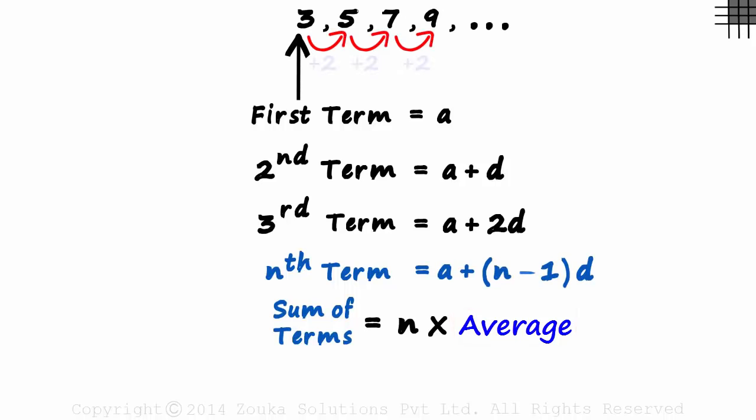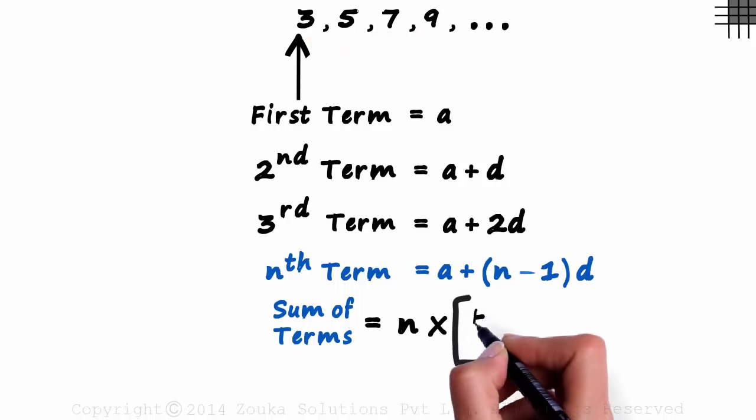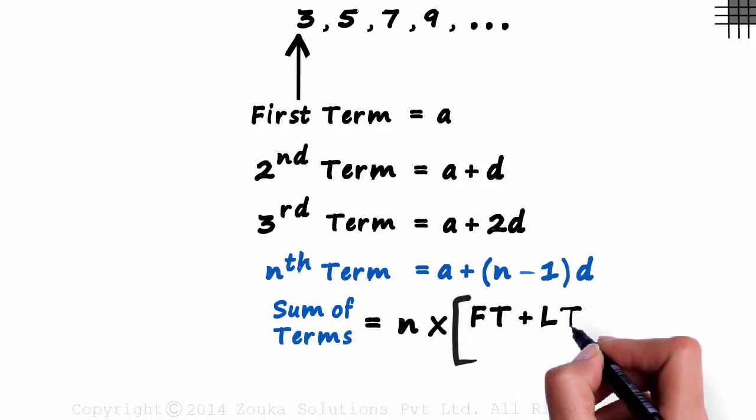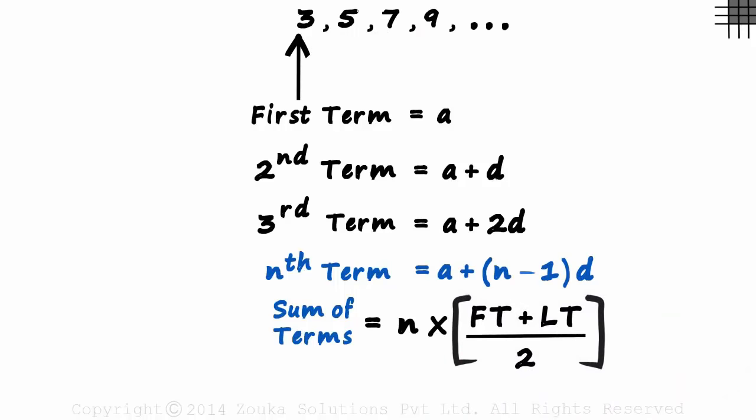All sequences are evenly spaced numbers. For evenly spaced numbers, the average is the sum of first term and the last term over 2. We get the sum of terms if we know the number of terms, the first term and the last term.